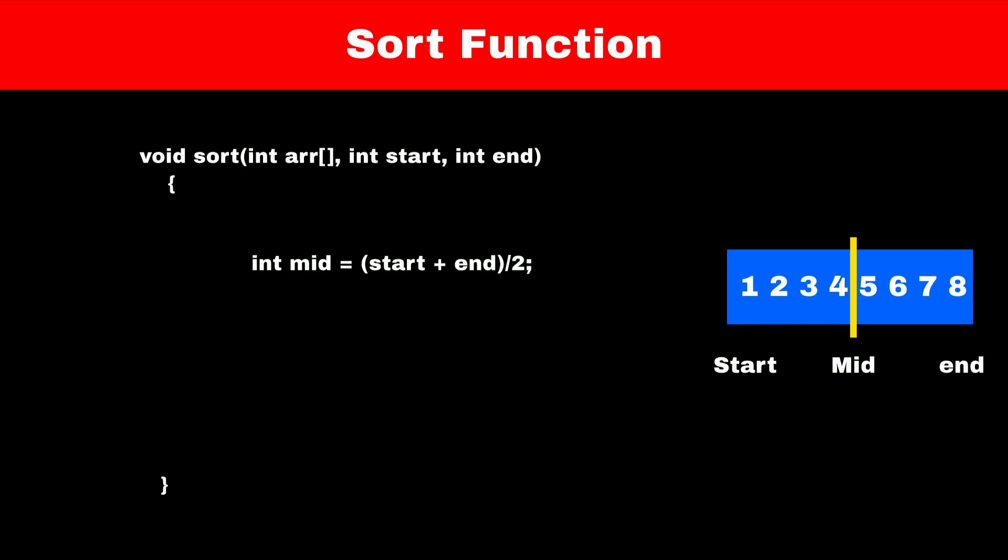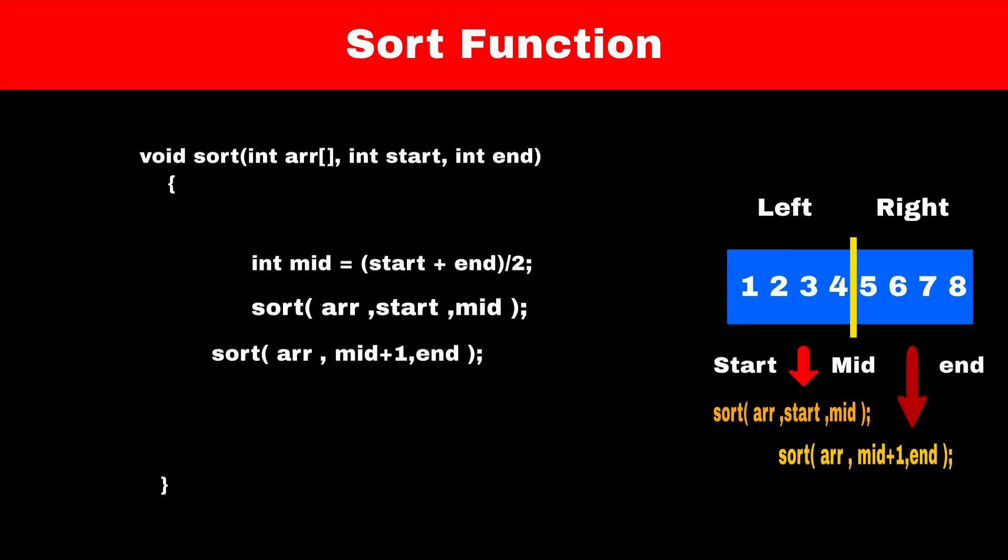Now again we have to divide both the subarrays into 2 parts. We will again recursively call the sort function. First sort function will have start as start and new end as mid. Another sort function will have new start as mid plus 1 and end as end. In this way we are splitting the array from middle.